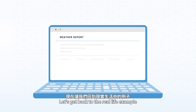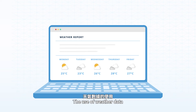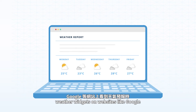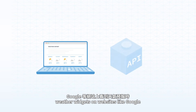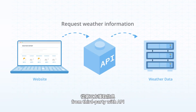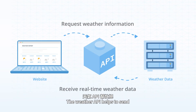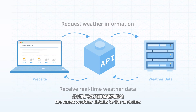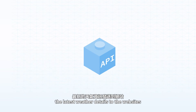Let's get back to a real-life example: the use of weather data. Most of the time when you see weather widgets on websites like Google, they are actually sourcing information from third-party providers with an API. The weather API helps to send the latest weather details to the websites.